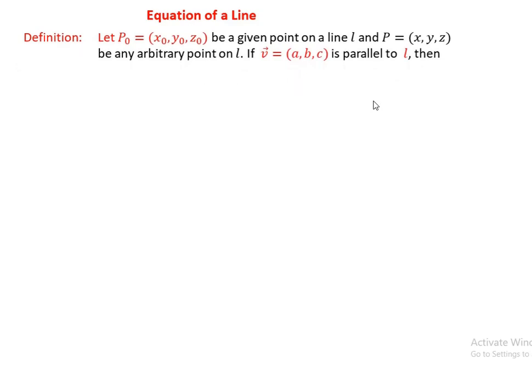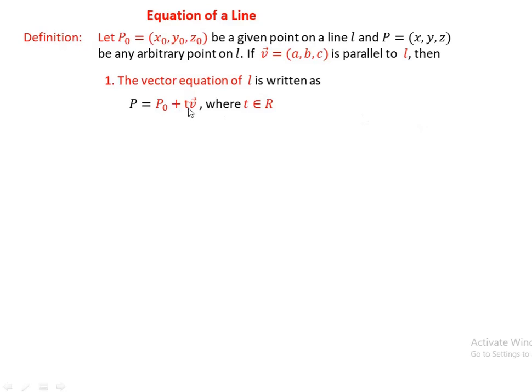By definition, let P-naught equal to (x-naught, y-naught, z-naught) be a given point on a line L, and P equals (x, y, z) be any arbitrary point on L. If vector V with components (a, b, c) is parallel to the line, then the vector form of the line is r equals P-naught plus t times V, where t is a real number parameter.